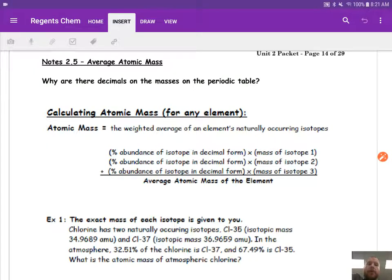Hey guys, this is video 2.5. We're going to be talking about average atomic mass in this video. And the question that guides our understanding and our thought process behind this is, why are there decimals on the masses on the periodic table?